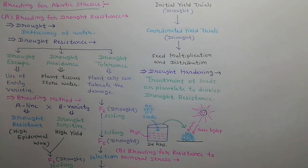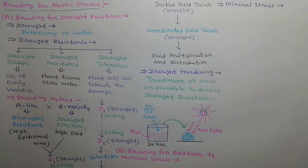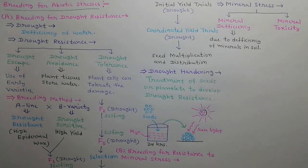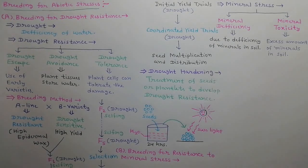Next we will discuss about the breeding for resistance to mineral stress. Mineral stress is divided into two categories: mineral deficiency and mineral toxicity. Mineral deficiency is due to deficiency of minerals in the soil, while mineral toxicity is due to excess amount of minerals in the soil, which is called salinity.